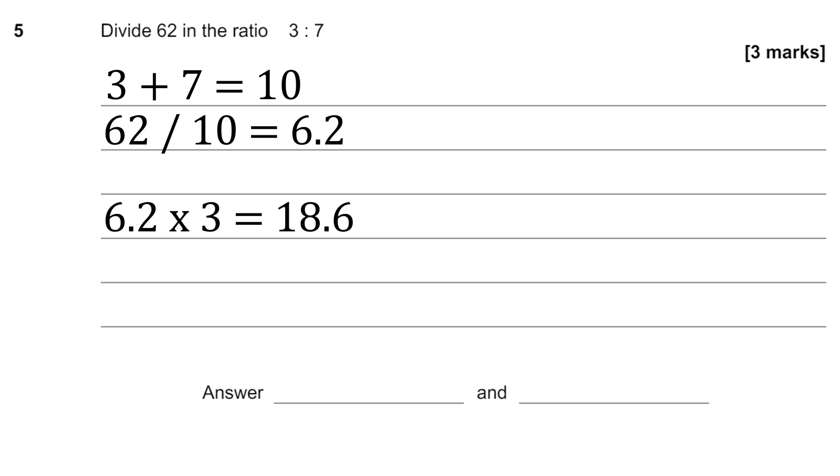So we just do 6.2 times 3, which is going to be 18.6. This is quite easy to do, you can just do 3 times 6 and 3 times 0.2 and just add them together.